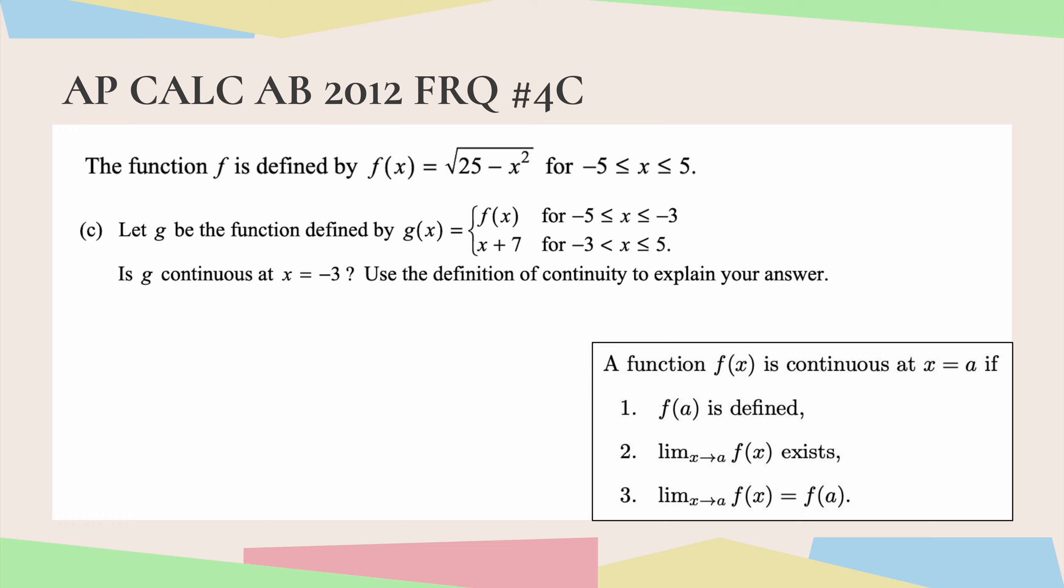Alright, the function f is defined by f of x equals the square root of 25 minus x squared for negative 5 is less than or equal to x is less than or equal to 5. Part c says let g be the function defined by g of x equals f of x for negative 5 is less than or equal to x is less than or equal to negative 3, and x plus 7 for negative 3 is less than x is less than or equal to 5. Is g continuous at x equals negative 3? Use the definition of continuity to explain your answer.